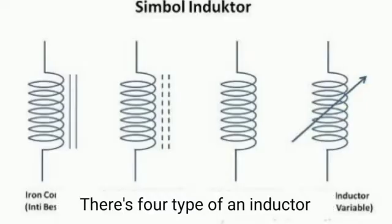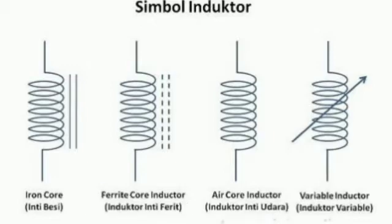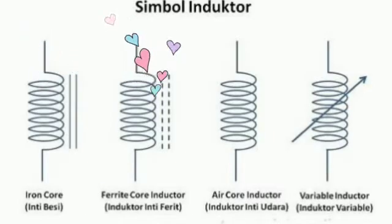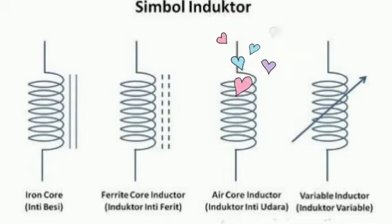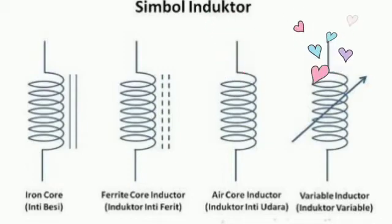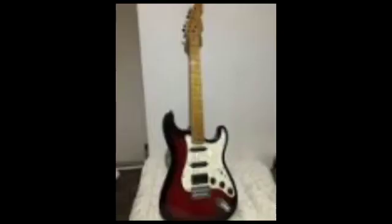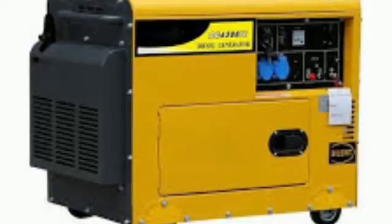There are four types of inductor: iron core, ferrite core inductor, air core inductor, and last, variable inductor. That's all. It's not just a fan — a lot of machines use inductors, like induction cooker, electric guitar, microphone, speaker, and a generator.